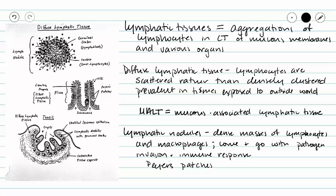Most of these are going to be diffuse lymphatic tissues where our lymphocytes are fairly scattered instead of being densely clustered. These occur in tissues exposed to the outside world, such as your respiratory tract, digestive tract, urinary tract, and reproductive tracts. They all have mucous membranes, so we call this diffuse lymphatic tissue MALT — mucous associated lymphatic tissue.